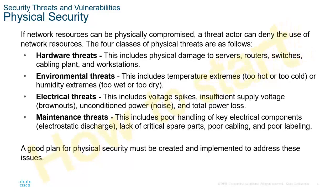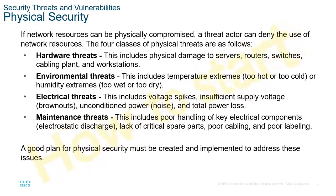Physical security is also a huge part of this — it involves someone showing up in person. We could be looking at hardware threats, which include physical damage to equipment. Environmental threats could be temperatures: too hot, too cold, too wet, or too dry. Electrical threats could involve a non-standard or non-stable power grid, resulting in sags or spikes, improper voltage to power units, noise, or even a complete power outage.